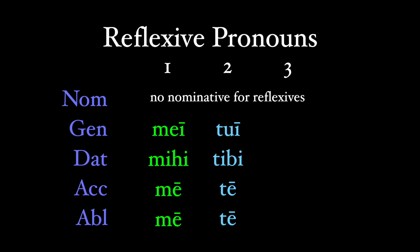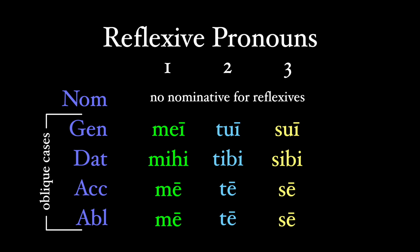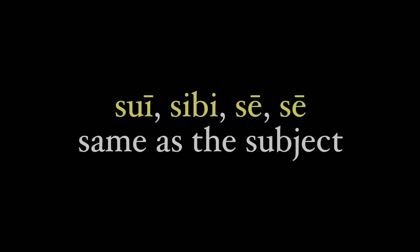But when we need to reflect back onto the subject with a third person verb, we use a different pronoun. There's no nominative, so I usually refer to this with its full declension: sui, sibi, se/sese. There's no nominative because this pronoun is only used reflexively — that is, it's only used in the oblique cases to refer back to whatever the nominative is. As I like to put it, sui, sibi, se/sese is the same as the subject. The alliteration of sui, sibi, se/sese and 'same' and 'subject' helps bring the point home.